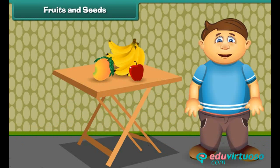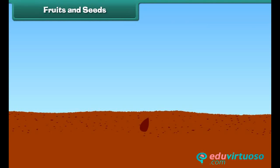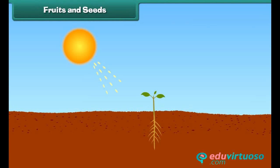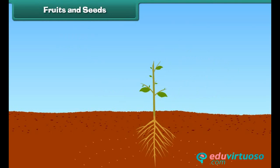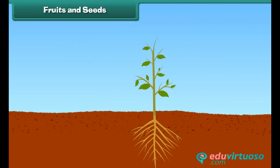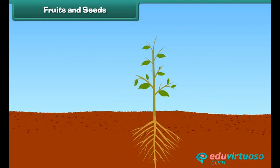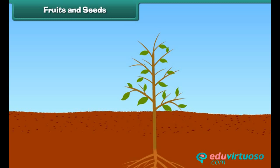A new plant grows from a seed, and the seed also stores food for the baby plant. When the seed gets water, air and a suitable temperature, it starts growing and soon develops into a new plant.